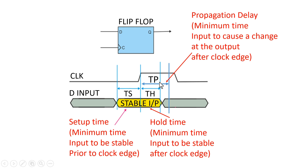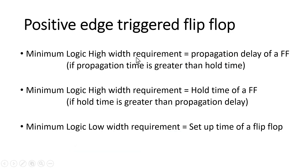If propagation time is greater than hold time, the minimum logic high width requirement equals T_propagation. If hold time is greater than propagation time, the minimum logic high width requirement equals T_hold. To summarize for a positive edge triggered flip-flop: minimum logic high width = T_propagation (if T_propagation > T_hold), or T_hold (if T_hold > T_propagation). Minimum logic low width = T_setup of the flip-flop.